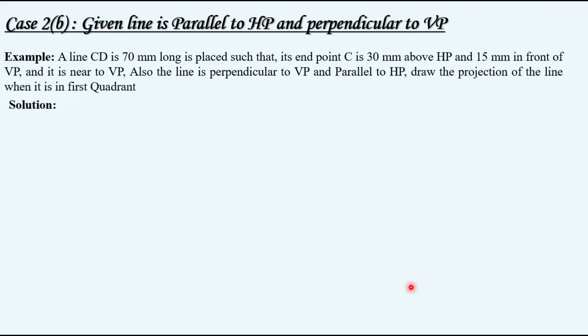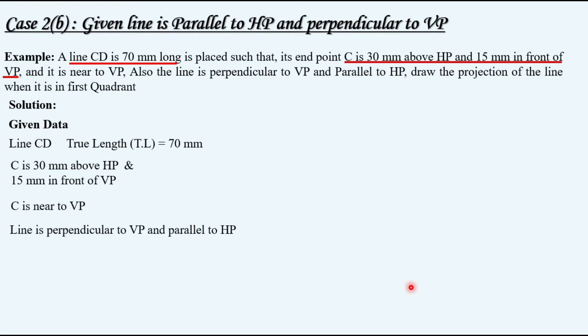Let's extract the given data first. Given line is CD with true length 70 mm. The locations of front view and top view for point C: 30 mm above HP, 15 mm in front of VP. Also C is near to VP. Line is perpendicular to VP and parallel to HP. Line is in first quadrant.